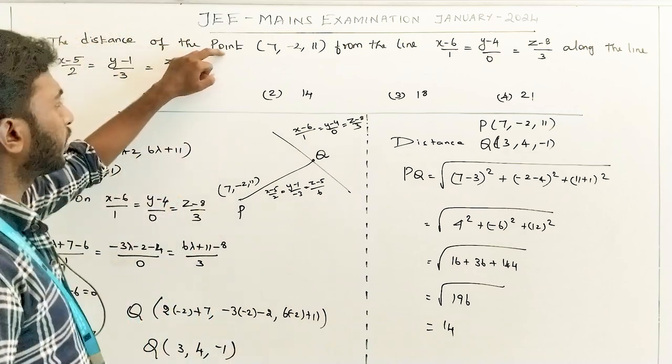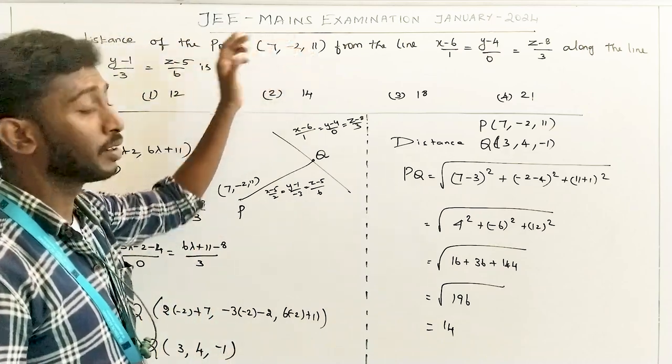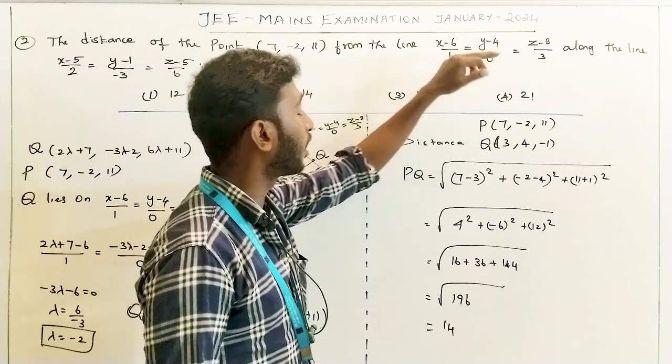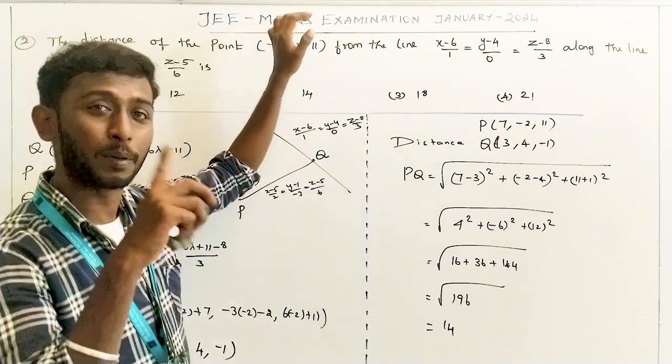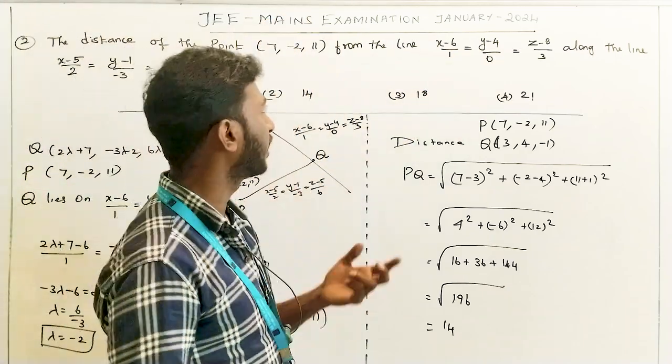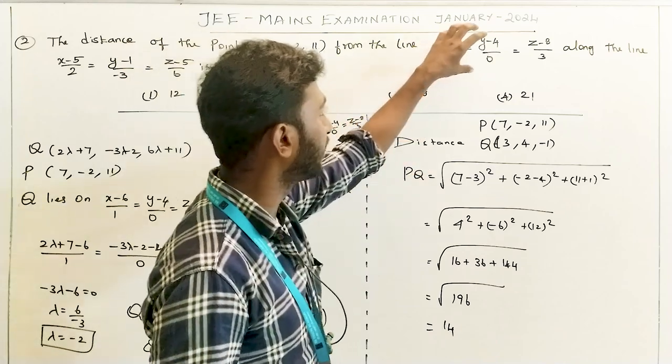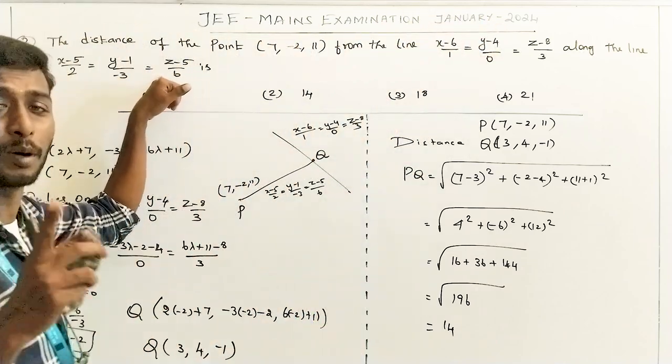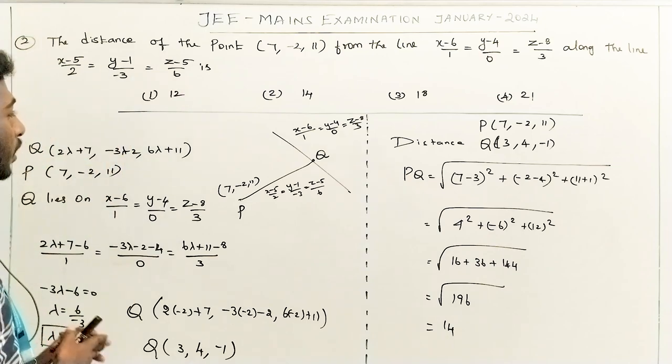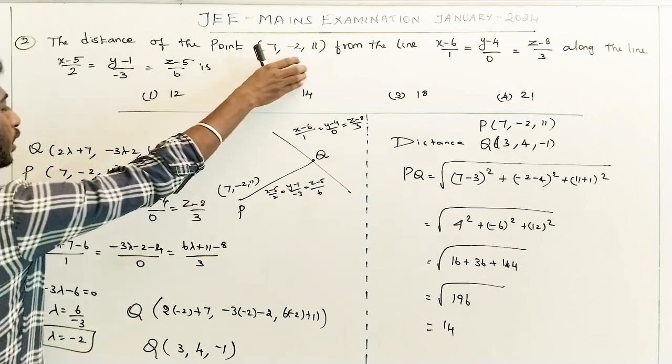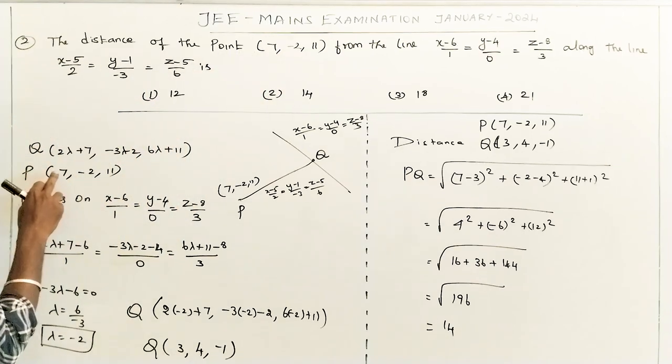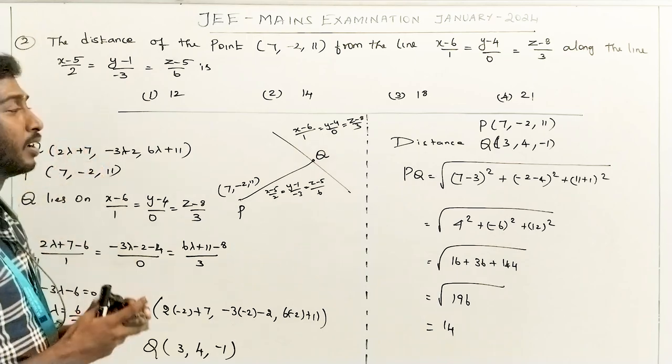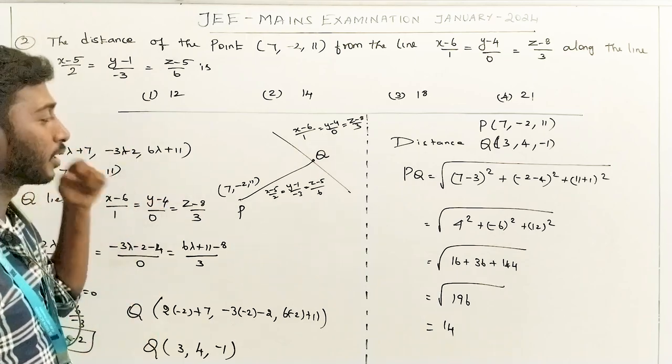The distance of the point (7,-2,11) from the line along the line. What is the distance value of this point? So let's say that I will change the point to P(7,-2,11). This point is Q. What is the point?